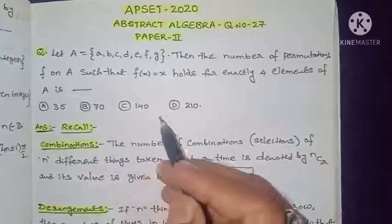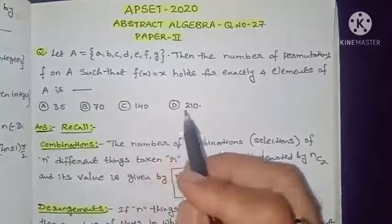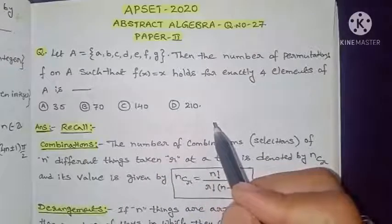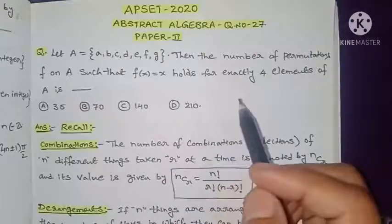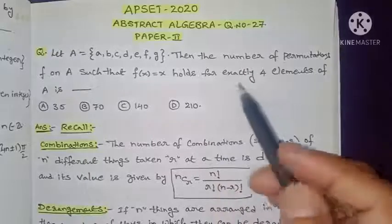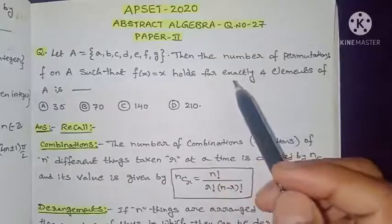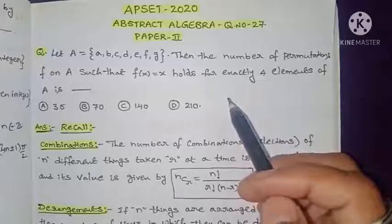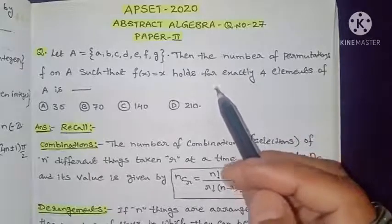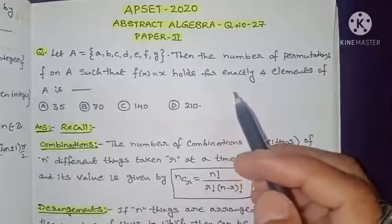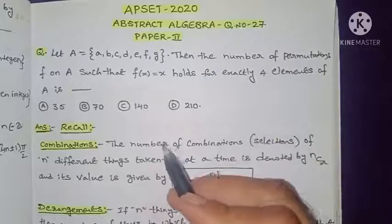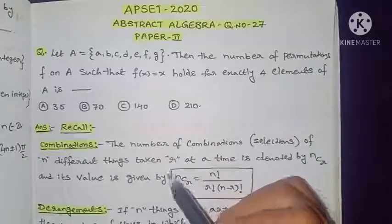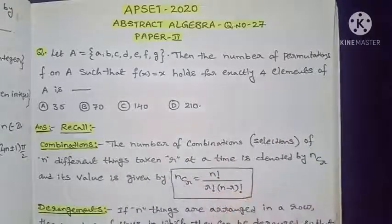The question is about combinations and derangements, so first we recall those two definitions. This is a standard question — every year we get one question from this topic, and in previous years we got the same type of question.